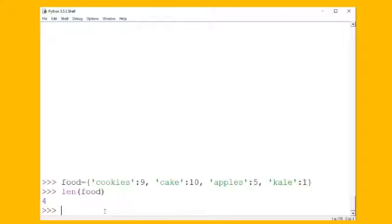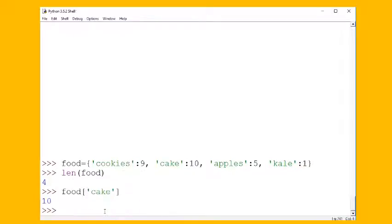We can look things up in the dictionary by doing the dictionary name, square brackets, and then the key. So in this little example I have my ratings on a scale of 1 to 10 on how delicious different foods are.